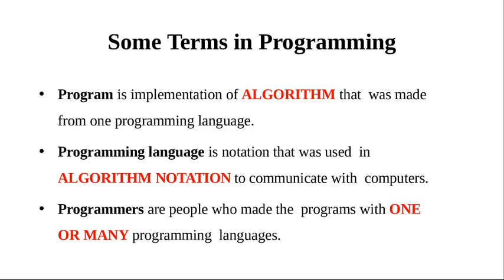Some terms in programming: A program is the implementation of an algorithm made from one programming language. Programming language is notation used in algorithm notation to communicate with computers. Programmers are people who make programs with one or many programming languages.